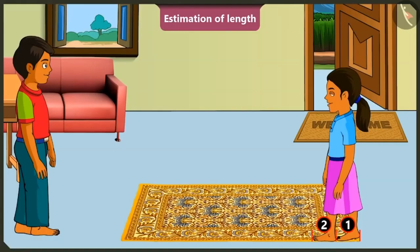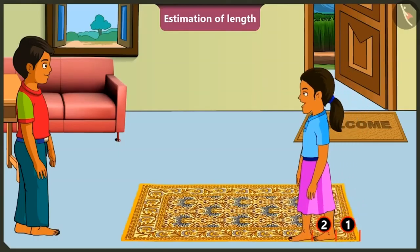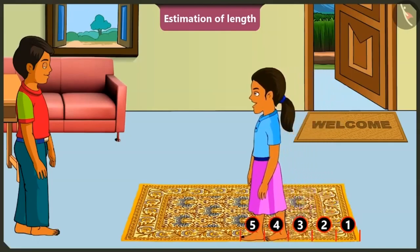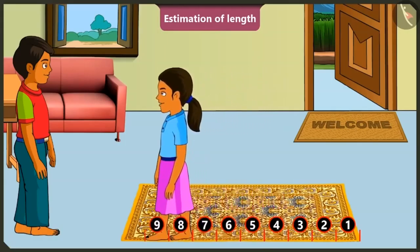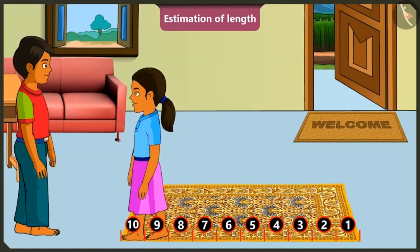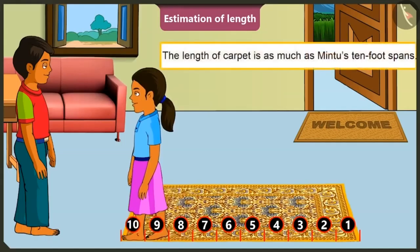Now, I will raise my right leg and place it in front of my left leg. There is a length of three foot span, right brother? Now, I walk through the length of the carpet. So, four, five, six, seven, eight, nine and this is ten. The length of this carpet is as long as my ten feet.